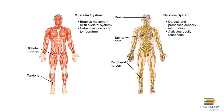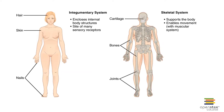The nervous system is composed of the brain, spinal cord, and peripheral nerves. It is one of our two communication systems of the body, the endocrine system being the other. The nervous system directs immediate responses to stimuli, usually by coordinating the activities of other organ systems. The integumentary system is composed of the skin, hair, and nails; it provides external support and protection and is involved in temperature regulation. The skeletal system is composed of bones, provides internal support and a flexible framework for body movement, forms blood cells, and stores minerals.